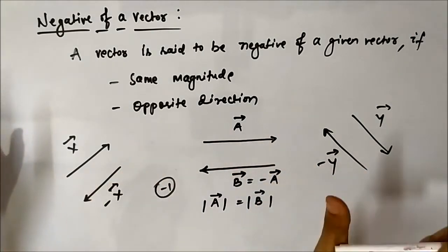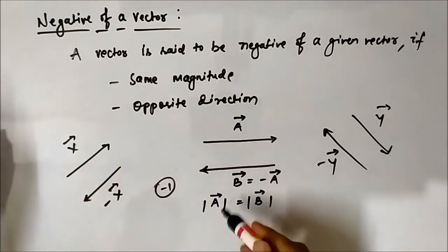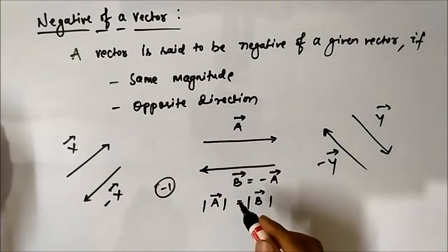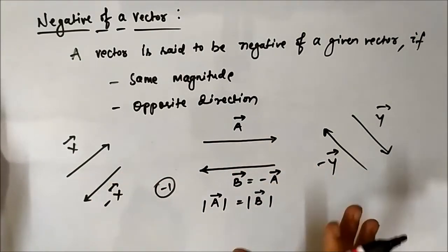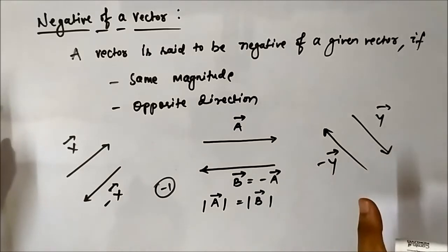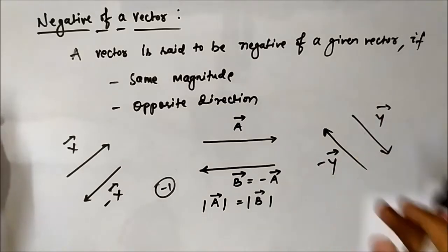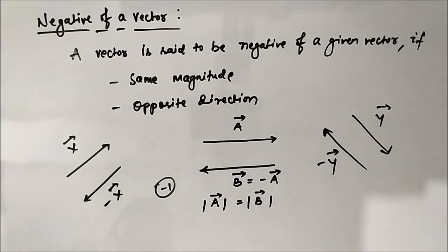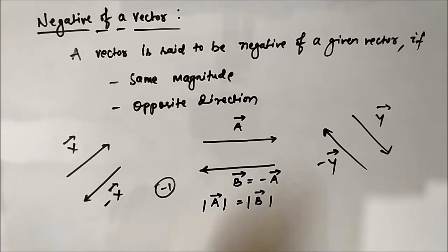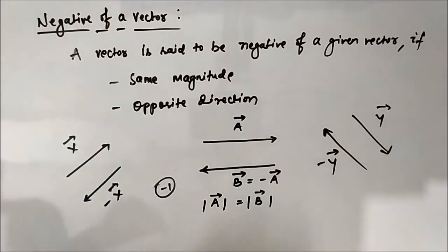They have the same magnitude — the modulus of both vectors will be the same — but they are oriented in exactly opposite directions. This is the concept of the negative of a vector.